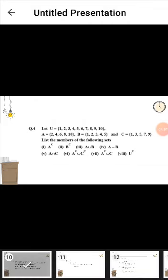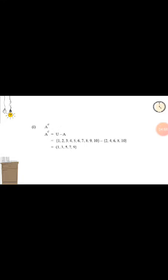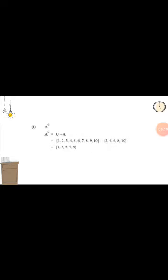Question number four: let there be a universal set whose elements are 1, 2, 3, 4, 5, 6, 7, 8, 9, and 10, and there are three subsets A, B, and C containing different elements. List the members of the following sets. Firstly solving part one: A complement. A complement means universal set minus A. The universal set is given as 1, 2, 3, 4, 5, 6, 7, 8, 9, 10 and subset A is given as 2, 4, 6, 8, and 10.